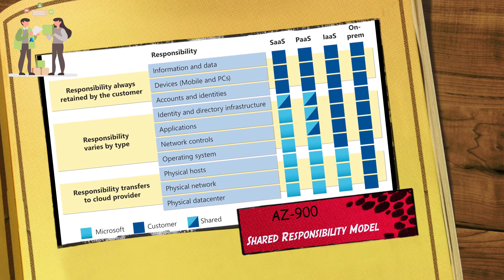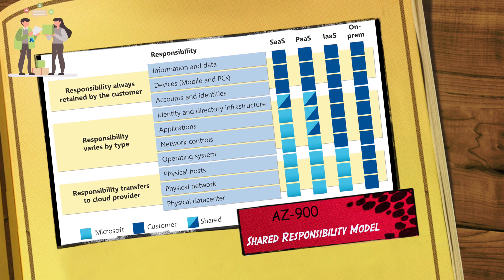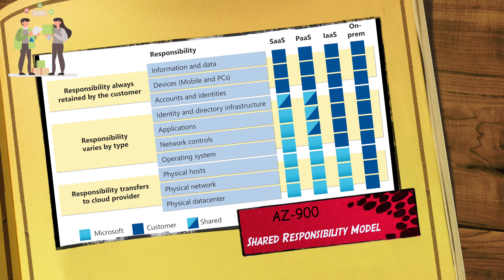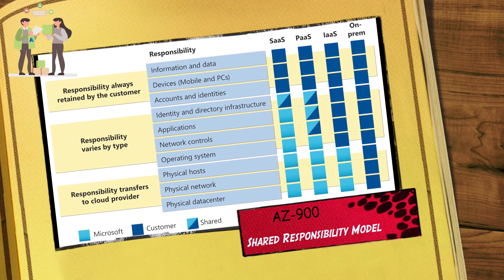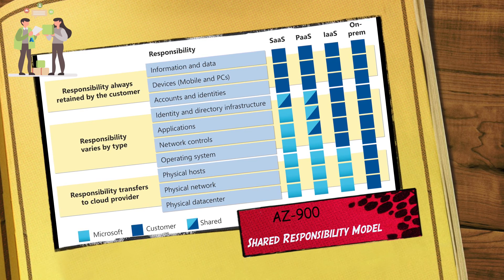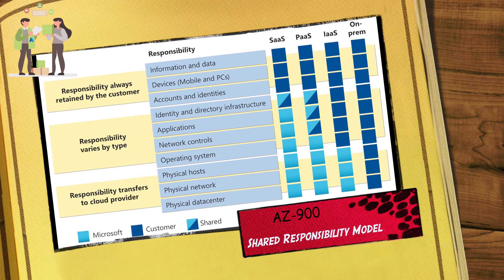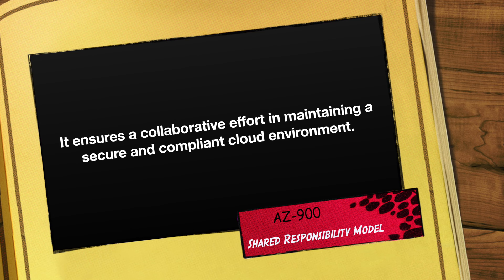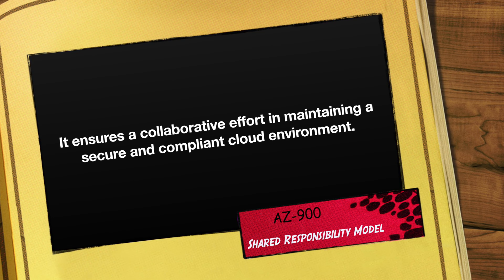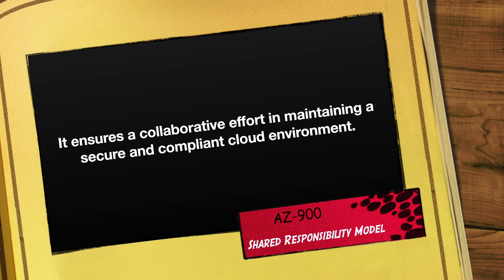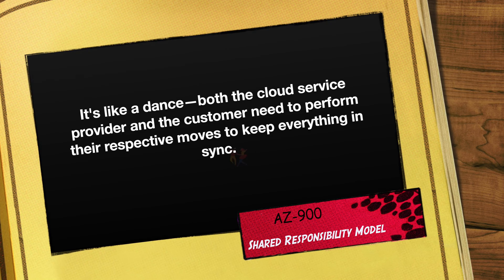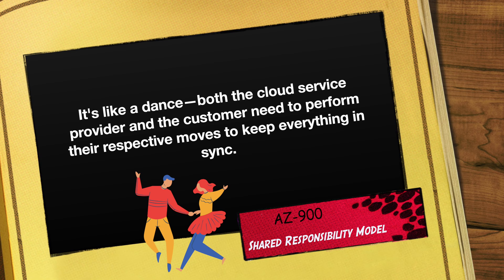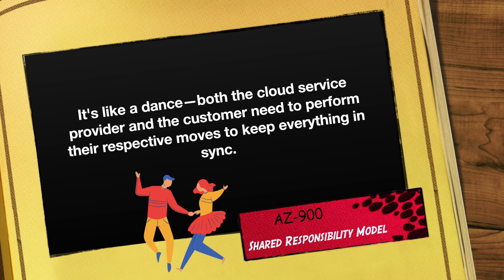On the other hand, customers have responsibilities in the cloud, like managing access control, servicing their applications, and protecting their data. That's how it's a shared responsibility — some parts are done by the provider, and other parts are done by the consumer. This model is essential because it ensures a collaborative effort in maintaining a secure and compliant cloud environment. It's like a dance — both the cloud service provider and the customer need to perform their respective moves to keep everything in sync.